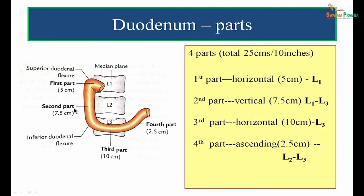Coming to the parts of the duodenum: measuring 25 centimeters in length, the duodenum is made up of 4 parts. The first part is horizontal, measuring 5 centimeters, and lies at the level of the first lumbar vertebra. It turns down and makes a bend known as the superior duodenal flexure, then runs down up to the level of L3 vertebra.